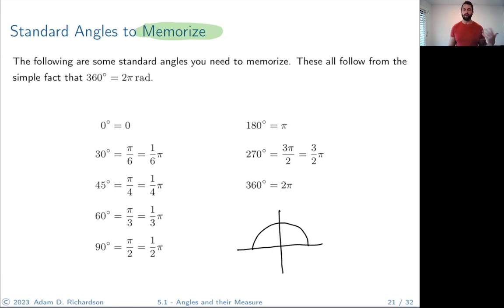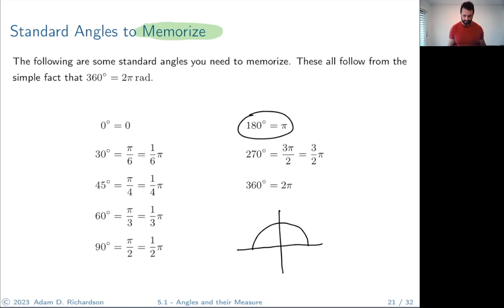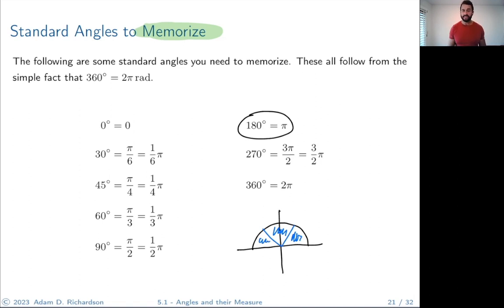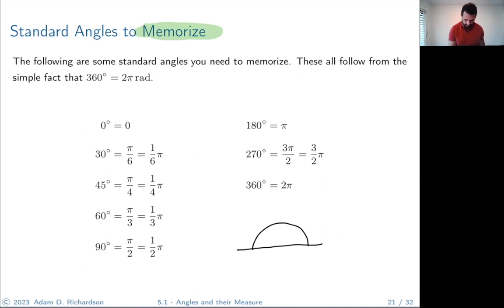Sixty degrees is π/3 — one third of pi. That makes sense because 60 degrees is one third of 180 degrees, and 180 degrees is pi. So cutting pi into three equal pieces, one piece is 60 degrees, two pieces is 120 degrees (2π/3), and three pieces is all of pi — 180 degrees.